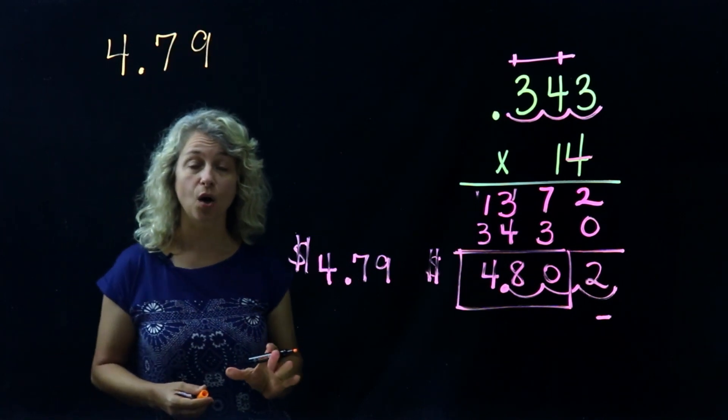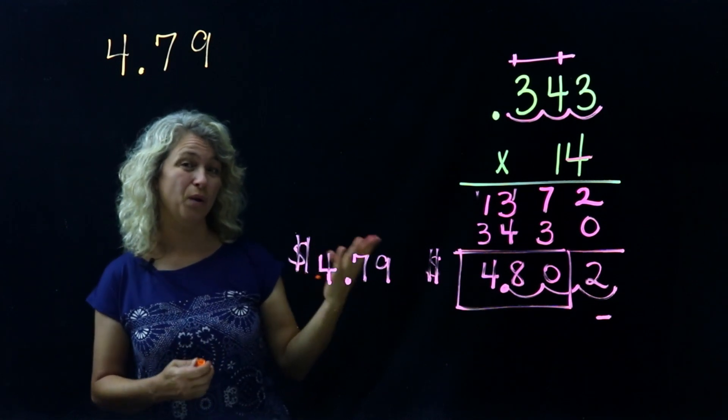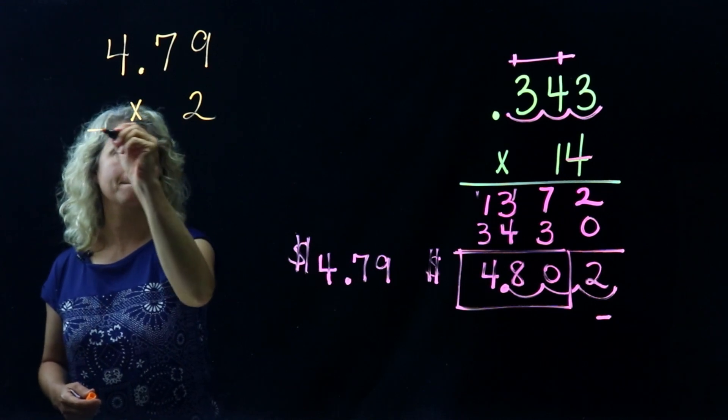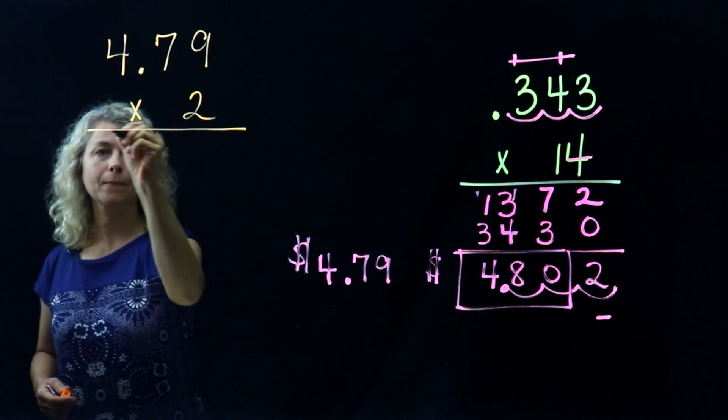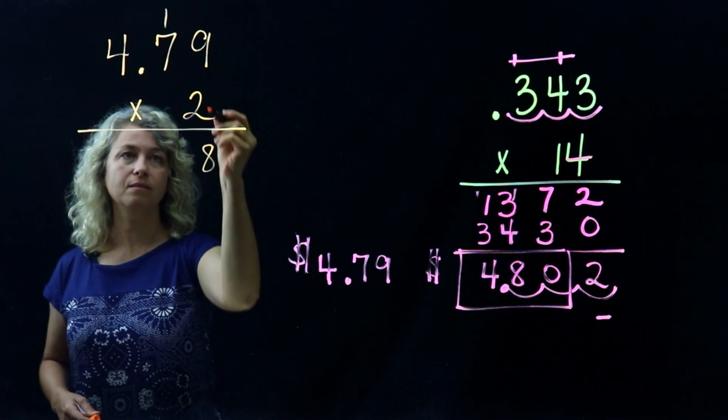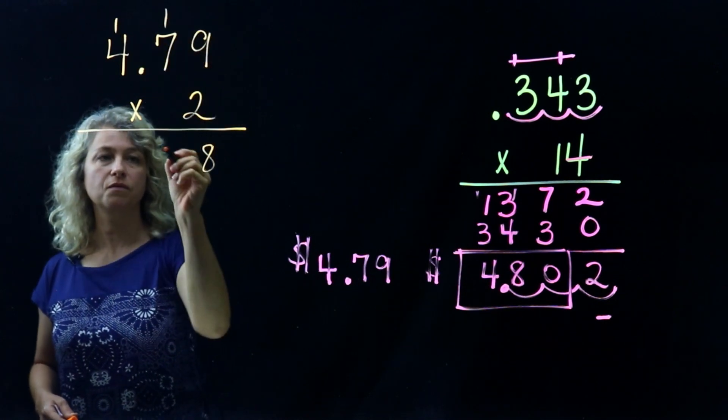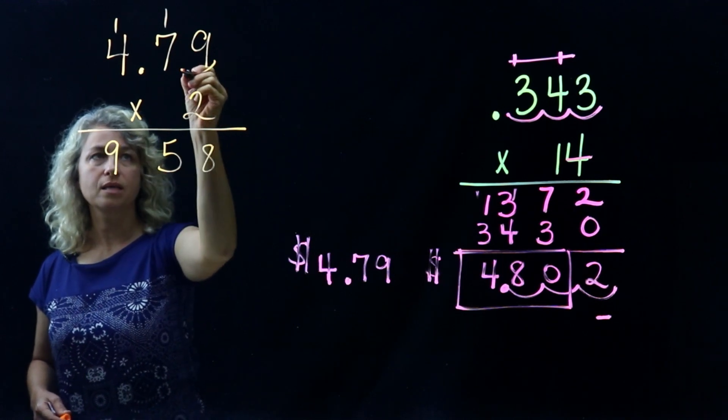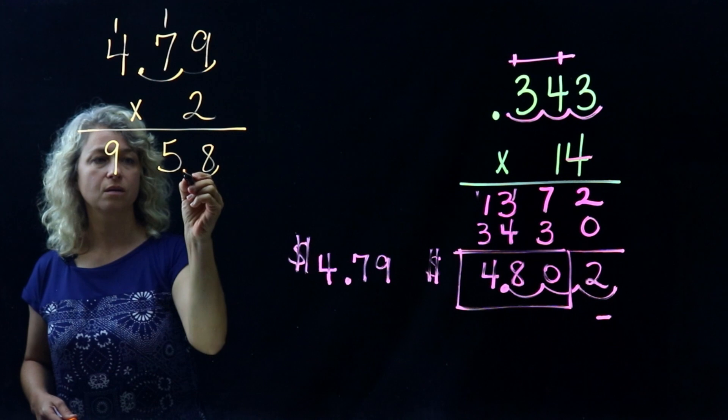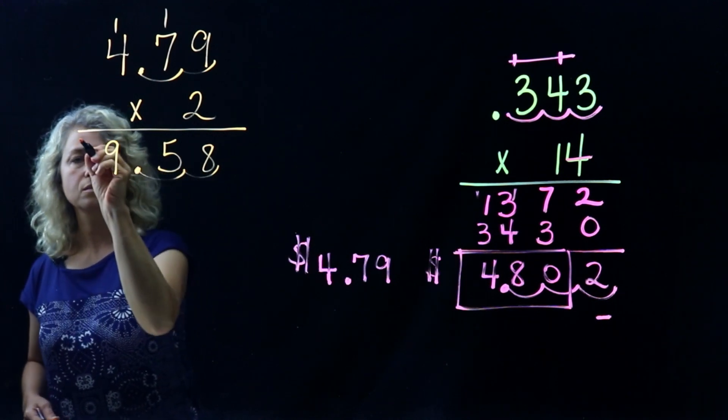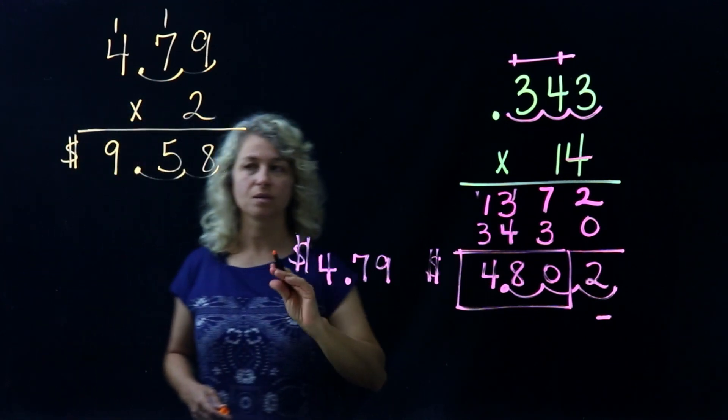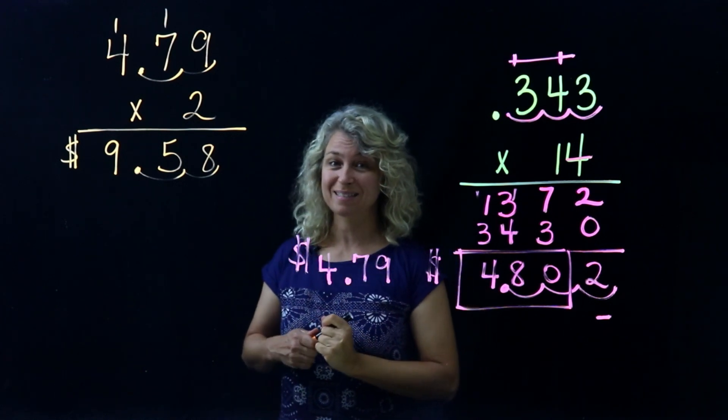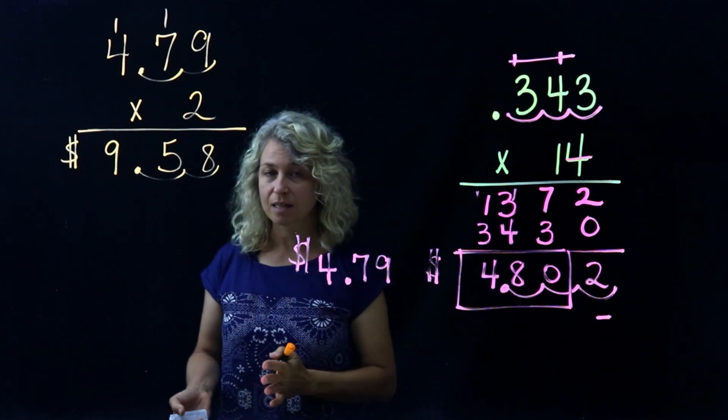Okay, so we actually bought two bags, so we would multiply 4.79 times 2. Two times nine is eighteen, fourteen plus one is fifteen, and eight plus one is nine. One decimal place over, two decimal places, so our actual cost for the almonds was nine dollars and fifty-eight cents before tax. All right, so have fun shopping!